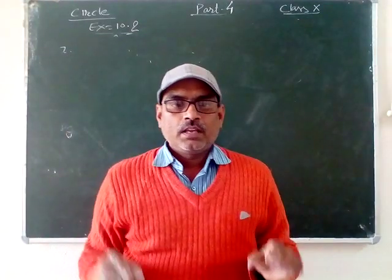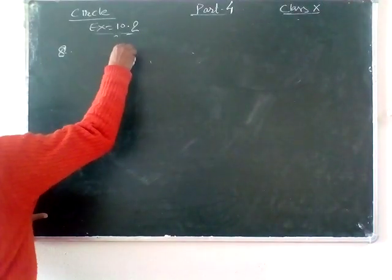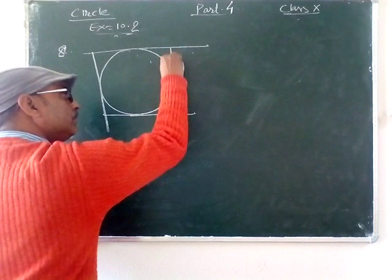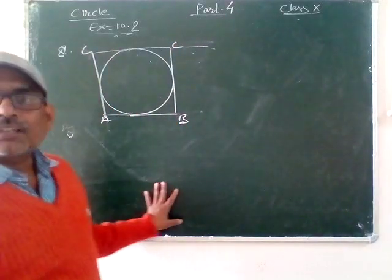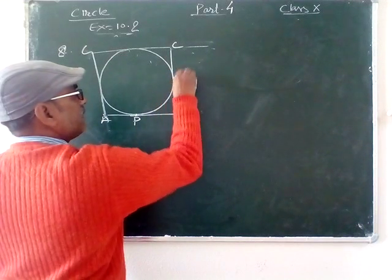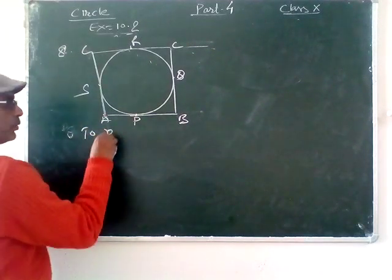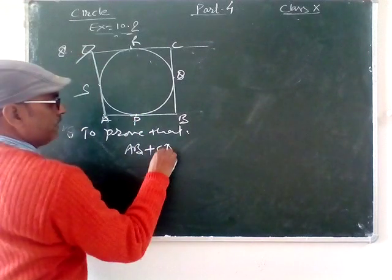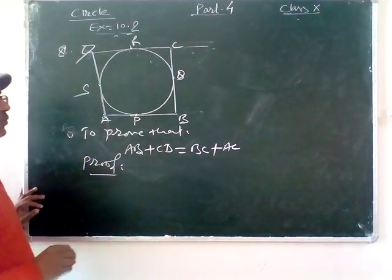Question number 8. Quadrilateral ABCD is drawn to circumscribe a circle. That is, all sides of the quadrilateral are tangent to the circle. AB touches the circle at P, BC at Q, CD at R, and DA at S. We have to prove that AB plus CD equals BC plus AD.